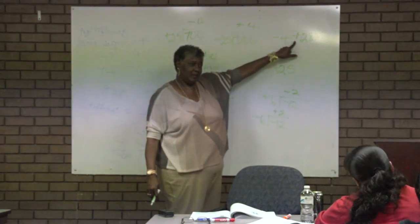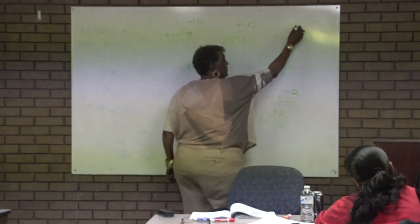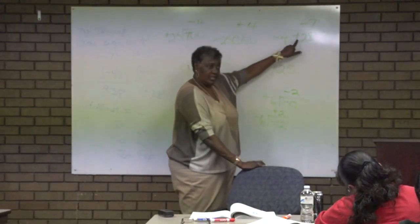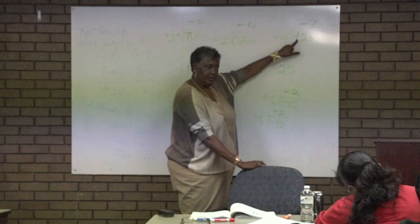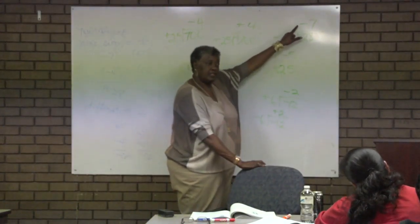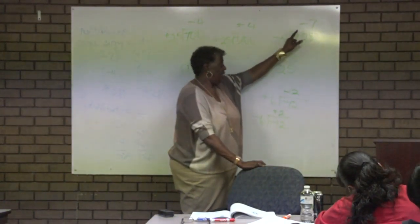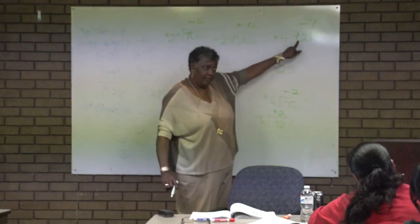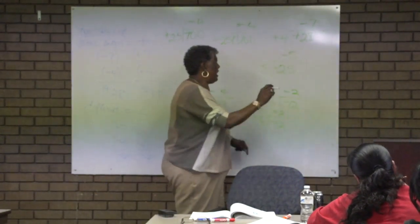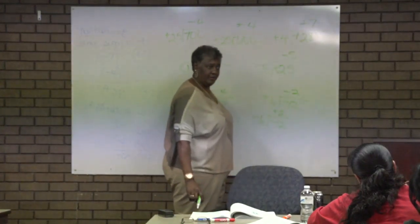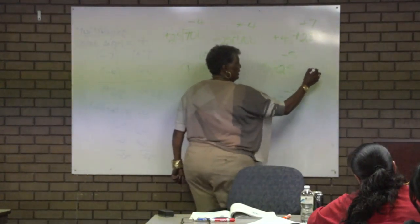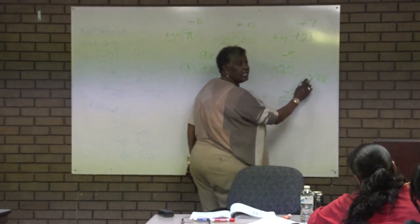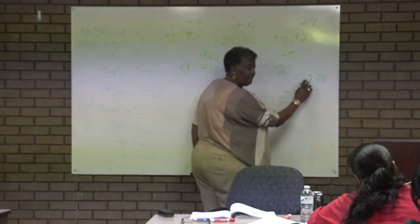The signs are the same — negative 7. Because it had to be the same to get a positive answer. This was negative, so that has to be negative. If this was positive, they have to be the same because this is positive, that would have to be positive. If this is negative 28, I know automatically the signs have to be different to get a negative answer.